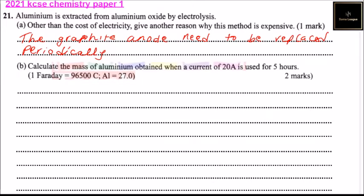Part (b): Calculate the mass of aluminum obtained when a current of 20 amperes is used for five hours. One Faraday equals 96,500 coulombs. Aluminum atomic mass is 27.